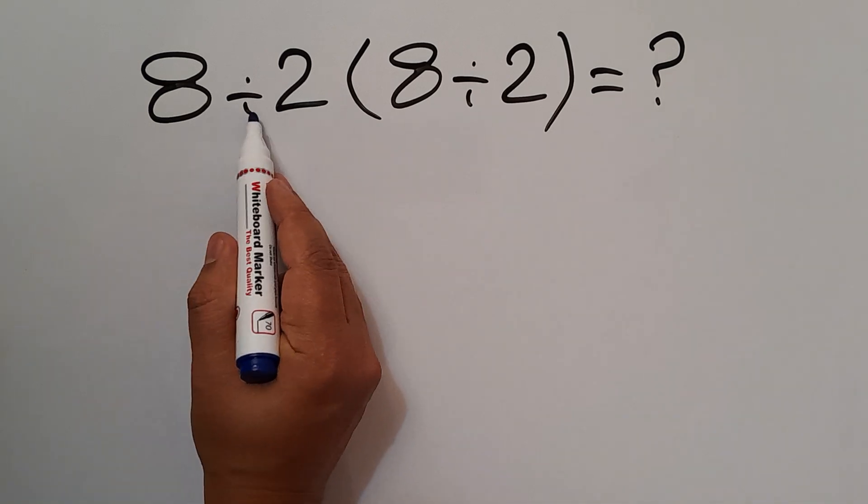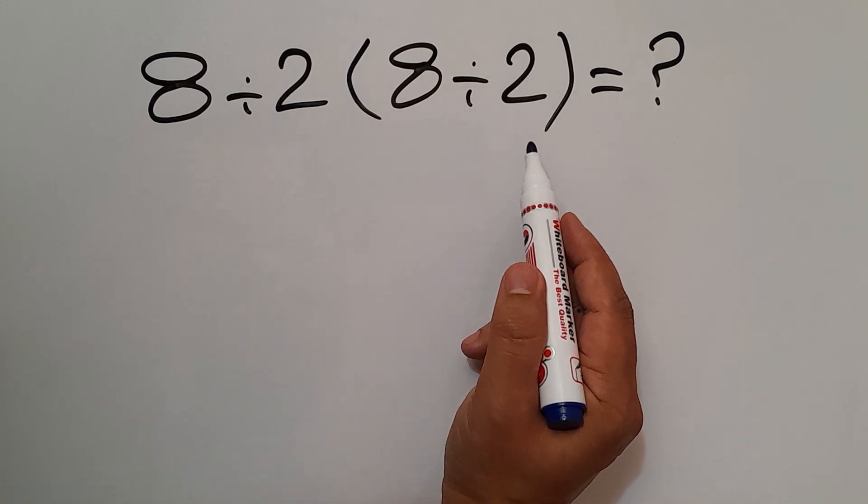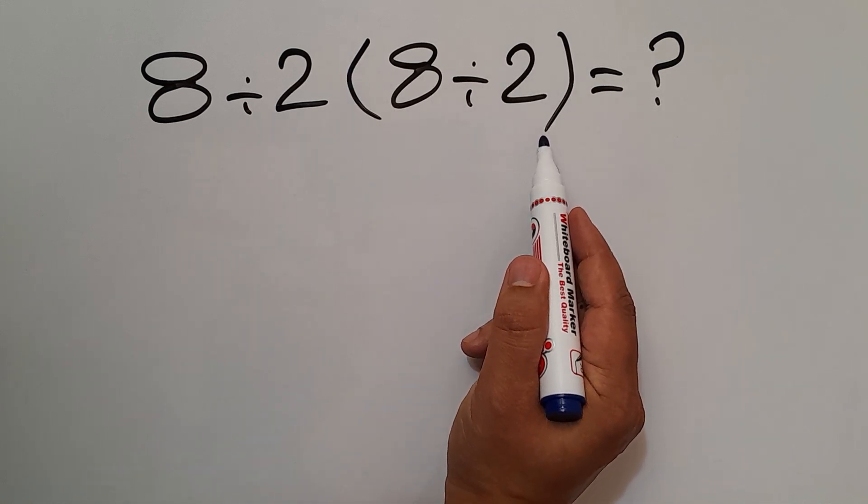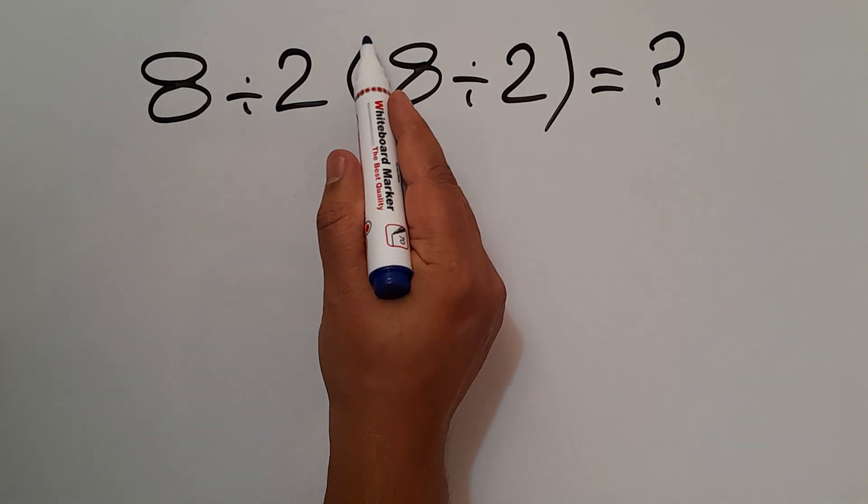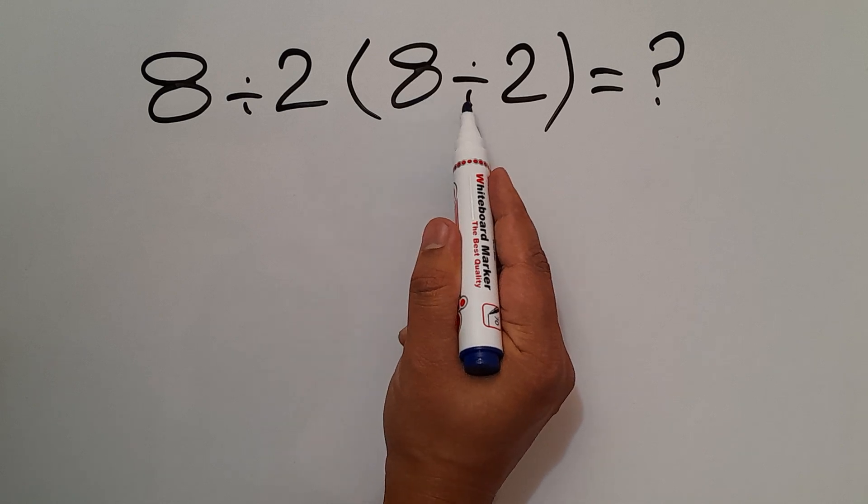In this expression we have one division, one multiplication, and one parentheses. According to the order of operations, parentheses has higher priority than other operations, so first we have to do these parentheses. Inside these parentheses we have 8 divided by 2.